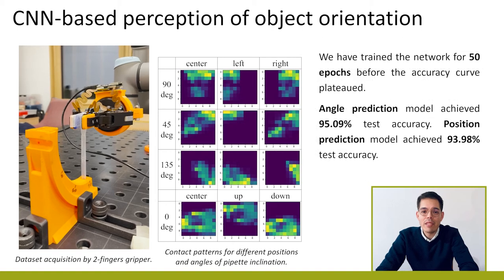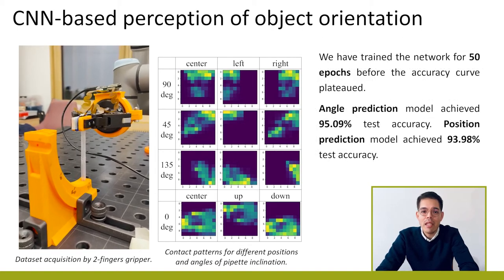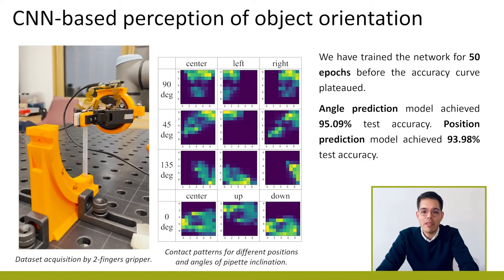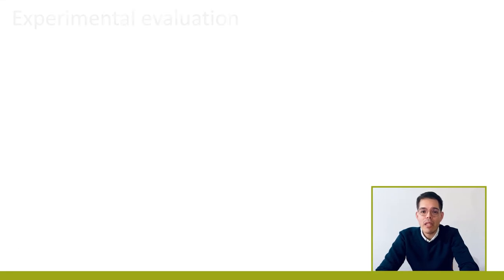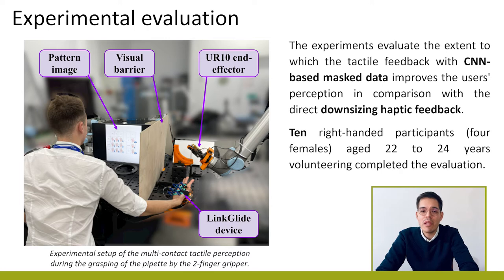In the test accuracy, the angle perception model achieves 95% and the position prediction model 93.98%. The experiment evaluates how tactile feedback with mask-based data improves the user's perception compared to direct downsizing haptic feedback. During the first experiment, the tilt and position perception was rendered directly from the sensor's data to the user's palm by the haptic display using the downsize method.